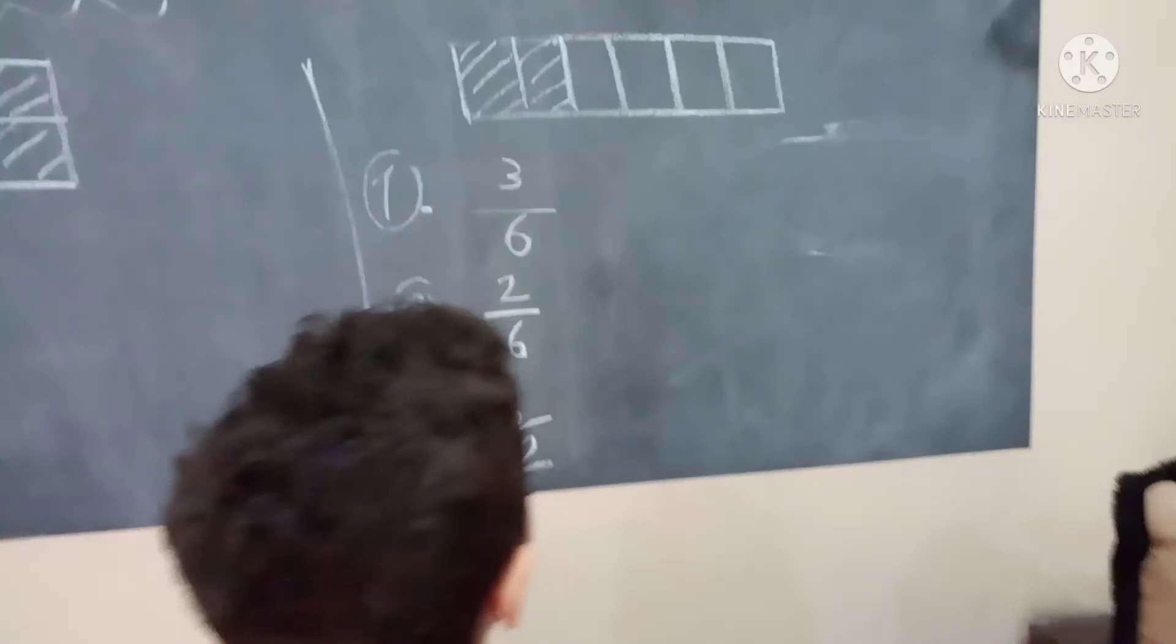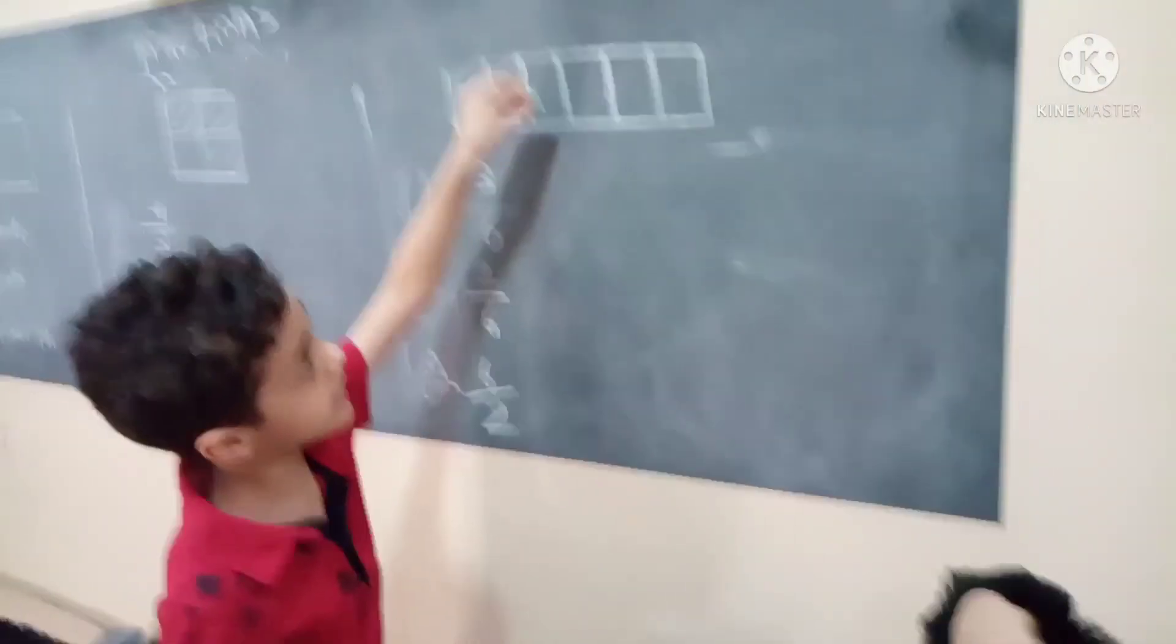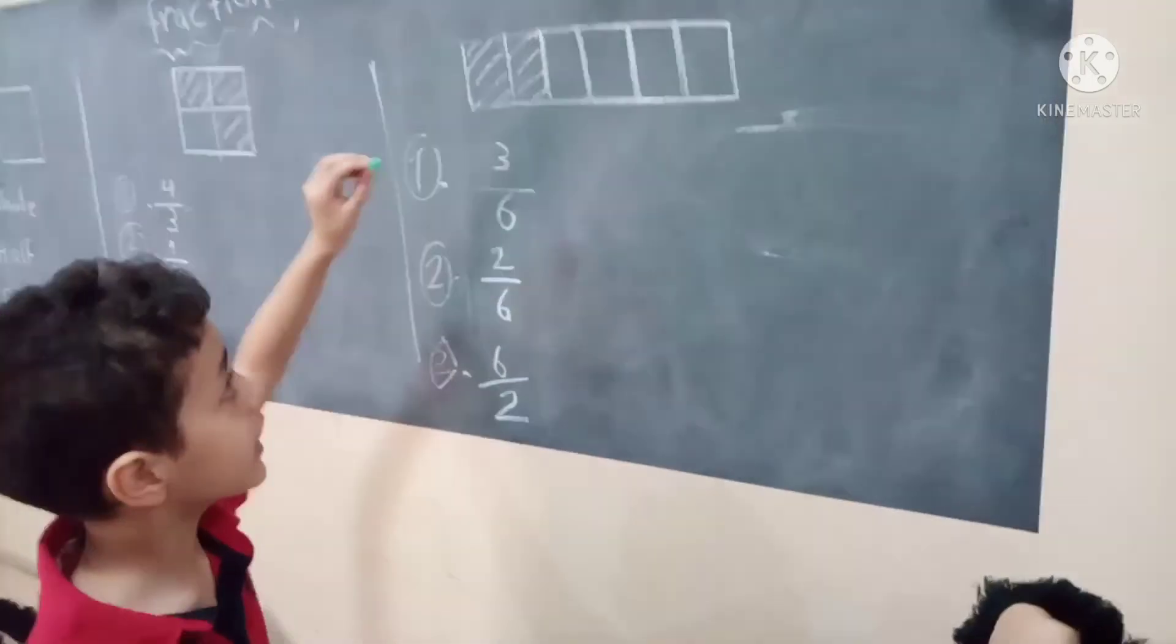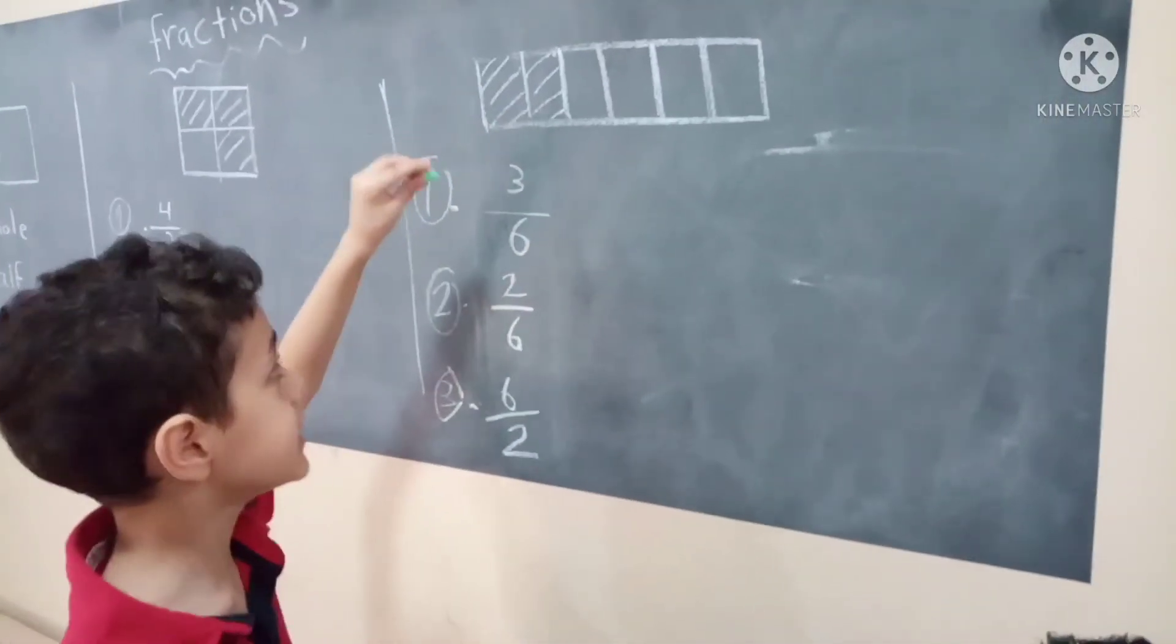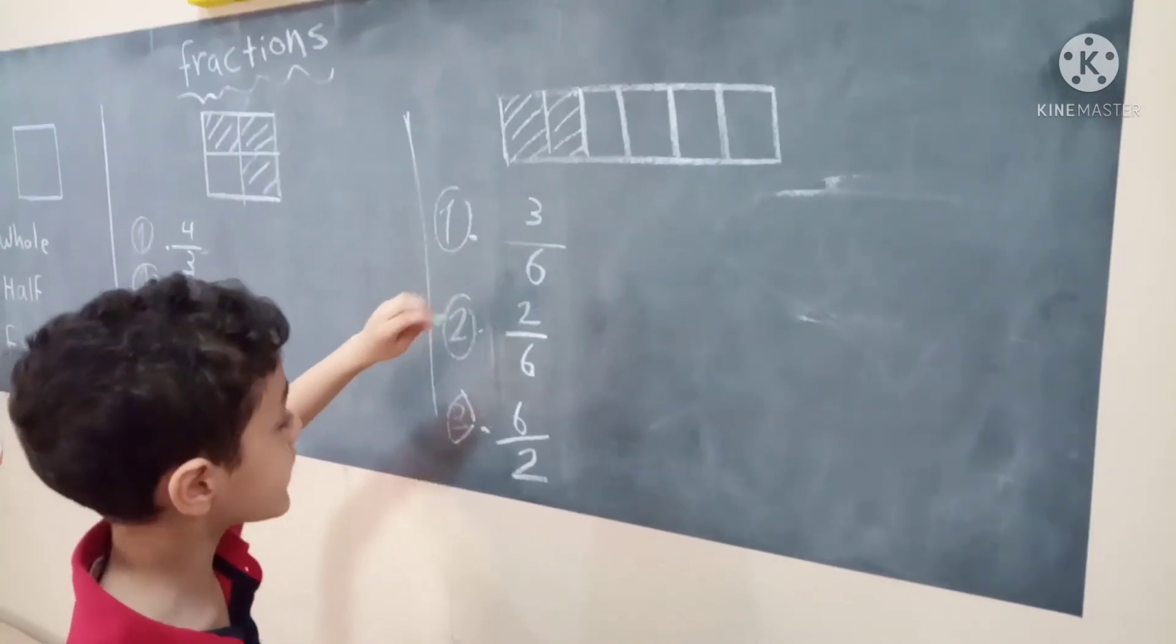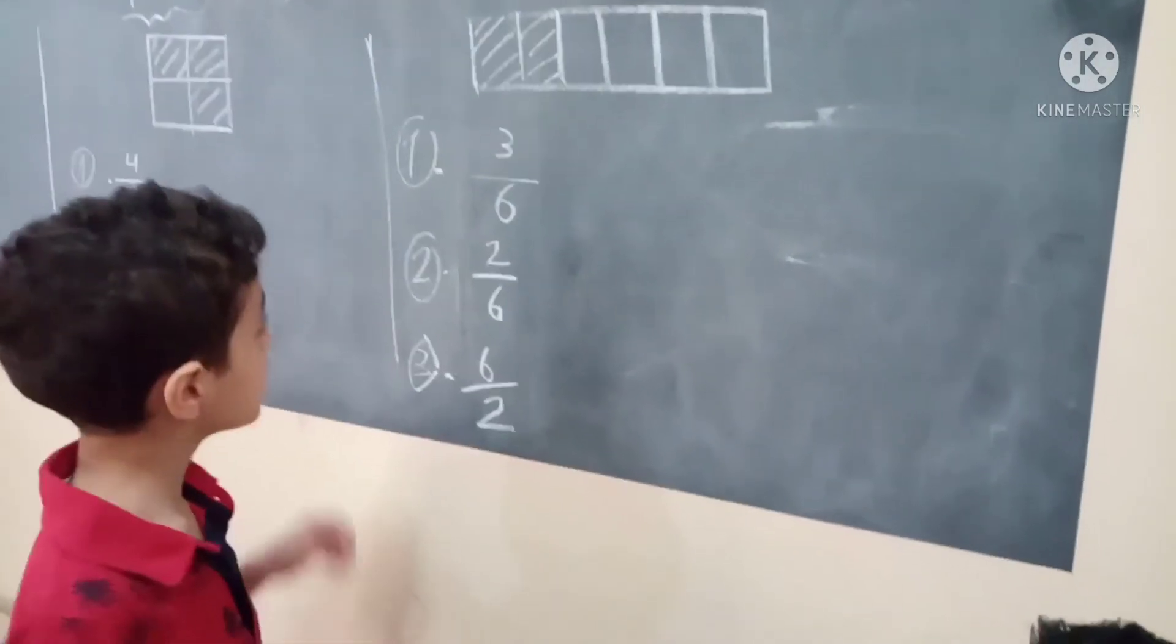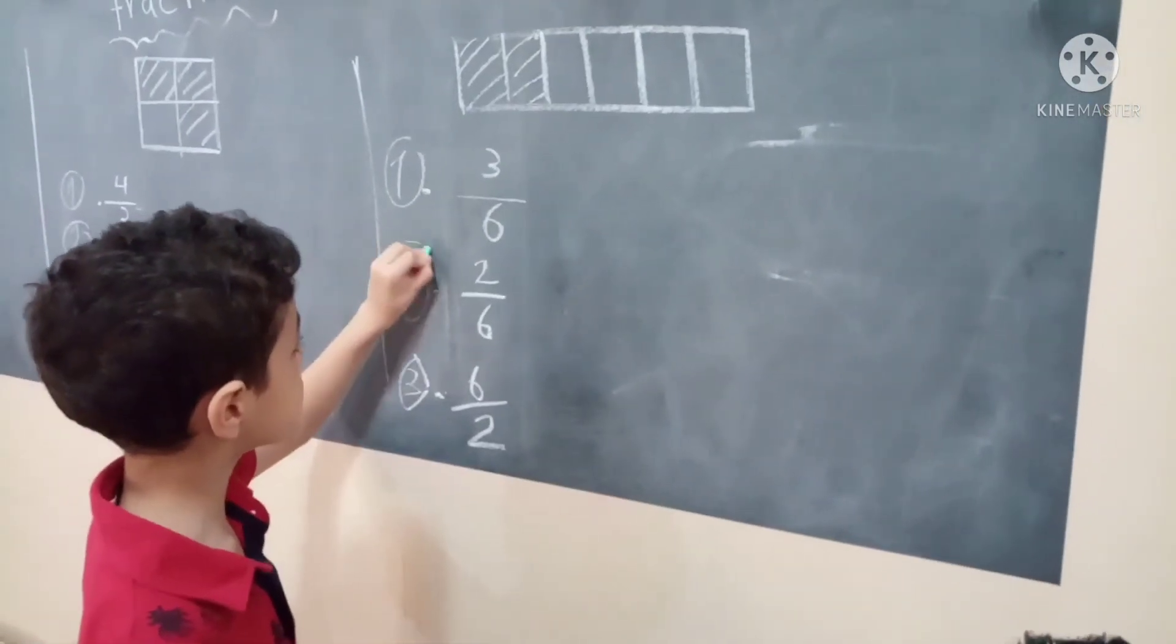Next one. It's the hardest question. How many in all? One, two, three, four, five, six. And the colors are two. So is it three over six or two over six or six over two? You got it right. It's two over six.